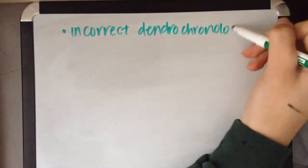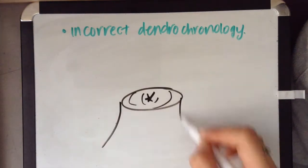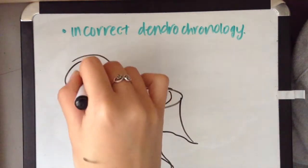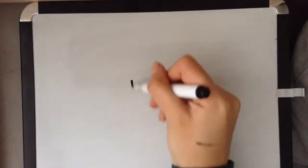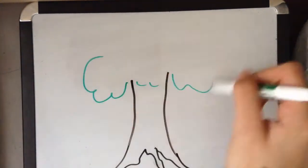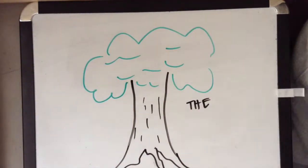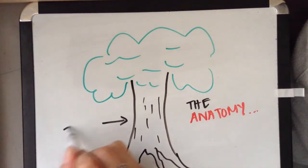The third explanation for his theory was incorrect dendrochronology. What exactly is dendrochronology? It's a method of determining the age of trees based on their anatomy, most commonly the tree rings.